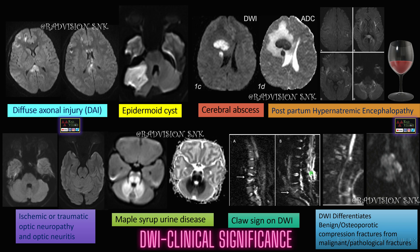Summing up: DWI is a very important sequence in diagnosing from head to toe along with other sequences. It is helpful in diagnosing diffuse axonal injury; differentiating epidermoid cyst from arachnoid cyst; differentiating cerebral abscess from GBM and metastasis; identifying the wine glass pattern in postpartum hypernatremic encephalopathy; identifying optic neuritis secondary to ischemic or traumatic causes; diagnosing maple syrup urine disease; and the CLASS sign on DWI helps in differentiating type 1 Modic changes from osteomyelitis, and in differentiating benign osteoporotic compression fractures from pathological or malignant compression fractures. Thank you all.